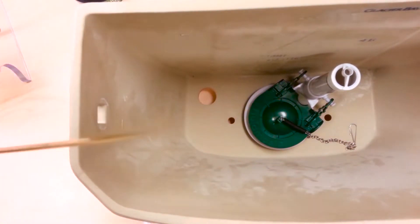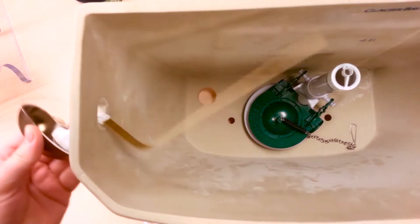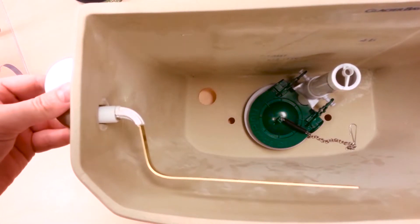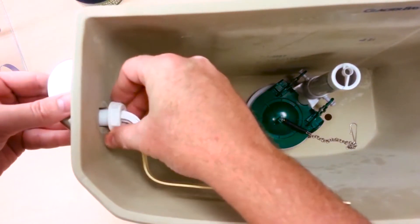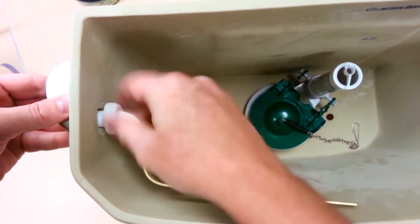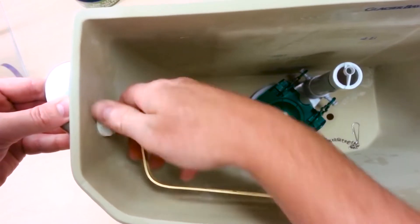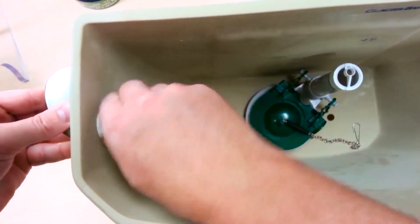So what you'll do is slide it through the hole, take your tank lever nut or lock nut, and these are reverse threaded so you turn it in a counterclockwise direction and hand tighten it as tight as you can get it.